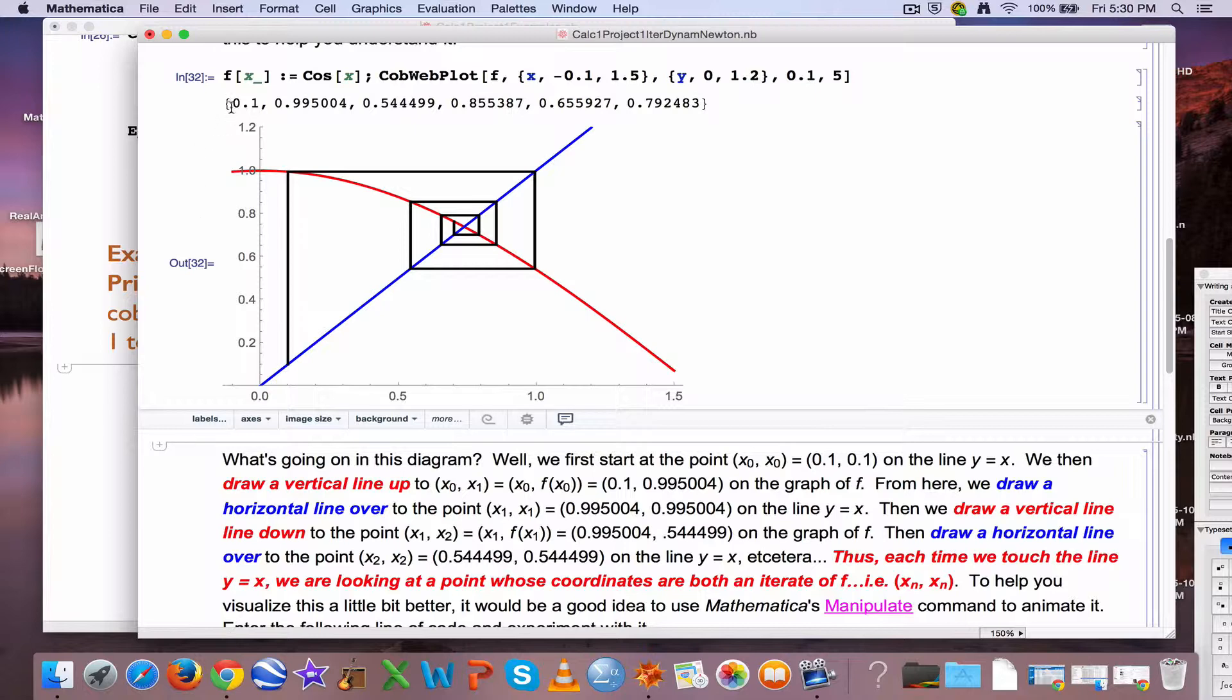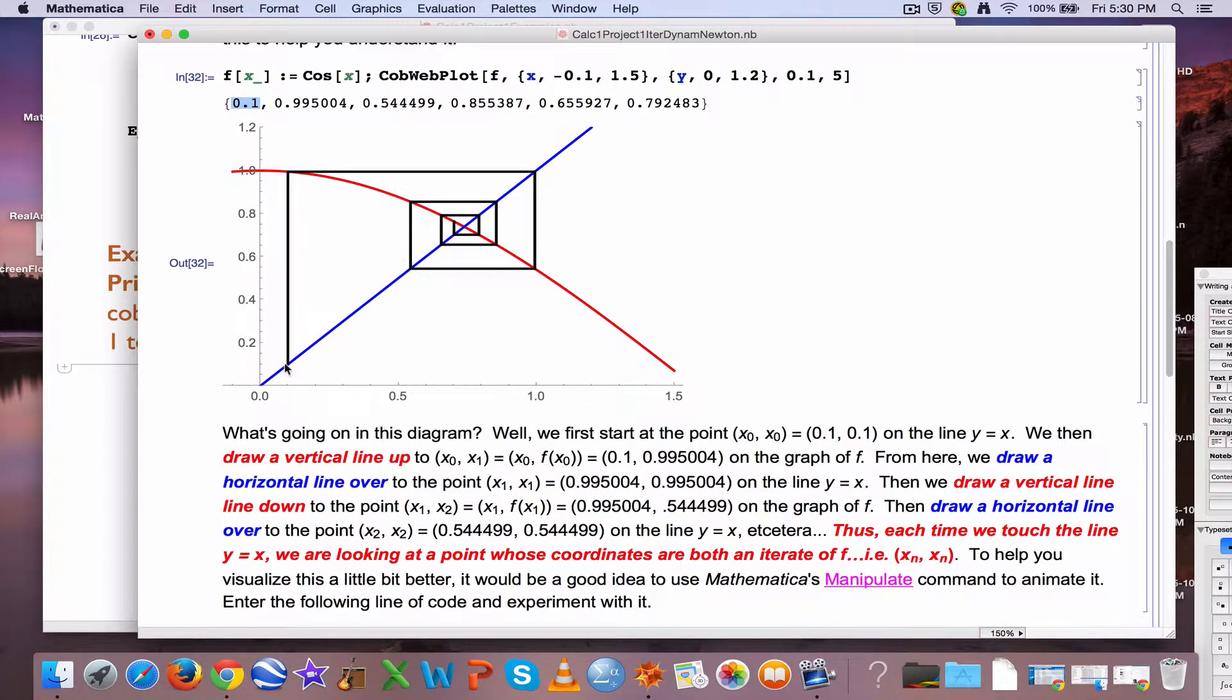The initial condition, the seed was 0.1, we plug 0.1 into the cosine function by imagining starting at this point, whose coordinates are 0.1, 0.1, to go up to the graph, the cosine, the second coordinate of this is about 0.995. We can find the output of the cosine function at 0.995 now by going over to the blue line whose coordinates, to the point whose coordinates are 0.995, 0.995.